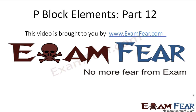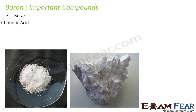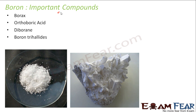Hello friends. This video on P-Blog elements part 12 is brought to you by examphia.com — no more fear from exam. There are various compounds of boron: one is borax, one is orthoboric acid, third is diborane, and the fourth is boron trihalide. We will discuss all these compounds of boron now.